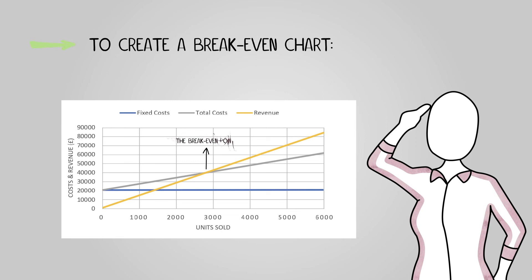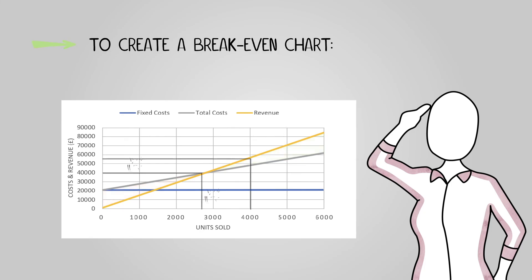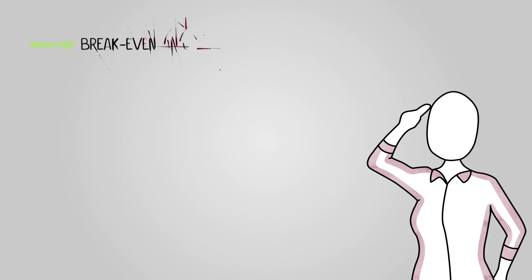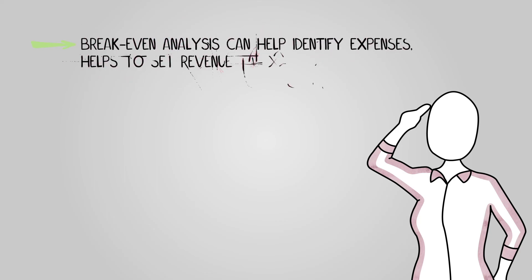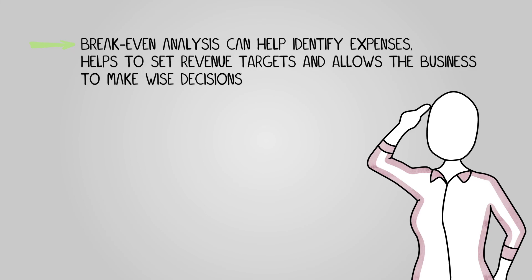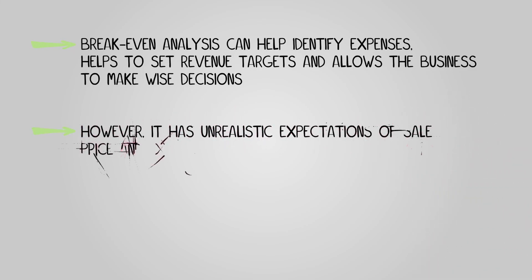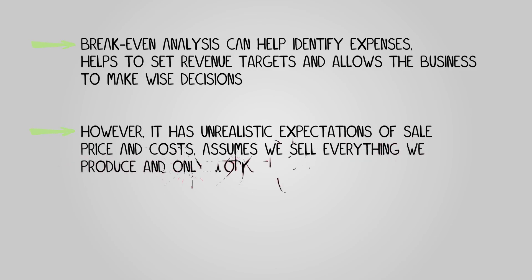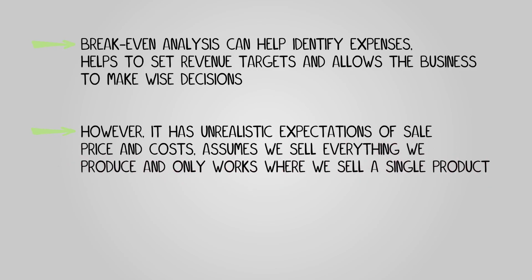Where the total costs line and revenue line cross, you have the break-even point. Anything above is profit, anything below is a loss, and it's possible to mark the margin of safety on the chart. Break-even analysis can help identify expenses, set revenue targets, and support wise decisions — however, it has unrealistic expectations of sale price and costs, assumes everything produced is sold, and only works where a single product is sold.